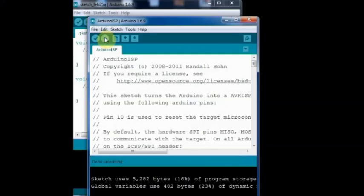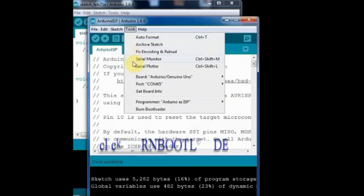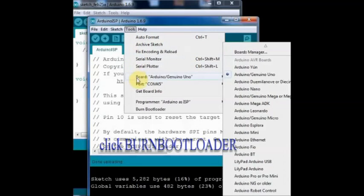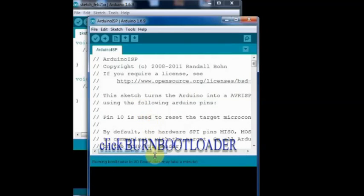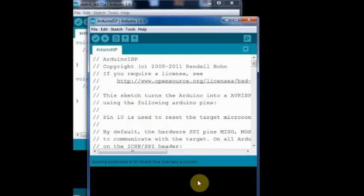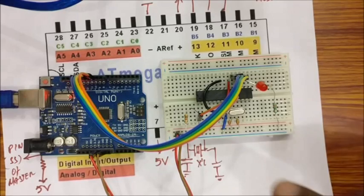Now let us burn the bootloader. Under tools leave the board setting as UNO and then just click burn bootloader. You can see the LEDs on UNO as well as the breadboard flickering shortly while uploading is being done.